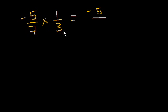Let's do two more problems. Minus 5 over 7 times 1 over 3. Minus 5 times 1 is minus 5, 7 over 3 is 21. That's it.